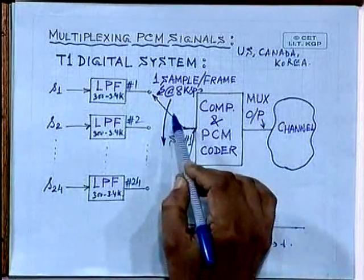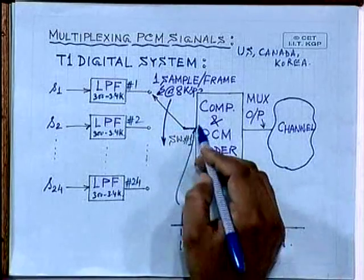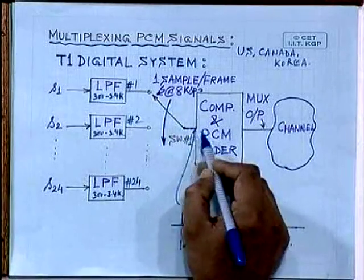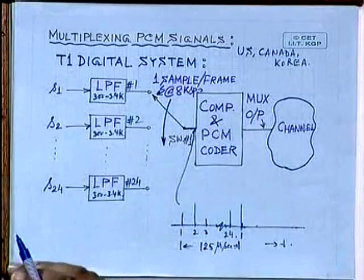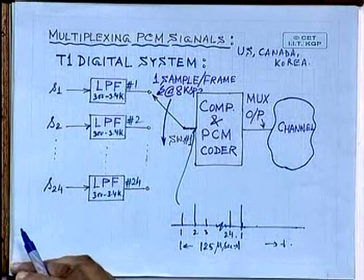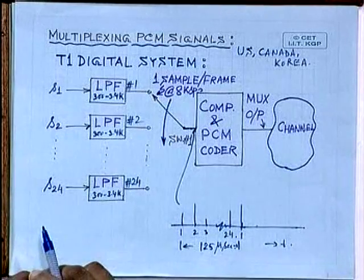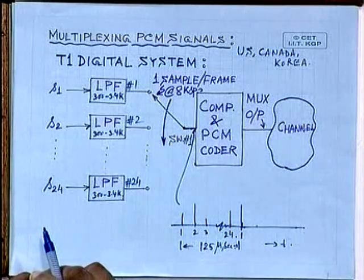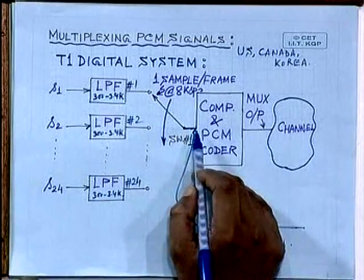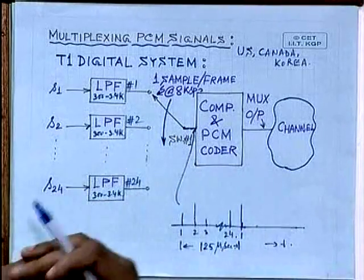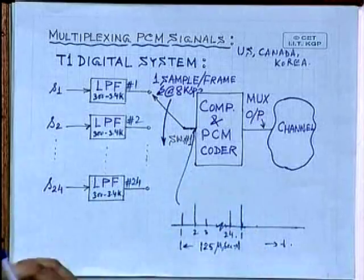Obviously, the commutator switch has to operate at a fast rate. The sample rate at the input of the compression and PCM coding unit is 24 × 8 = 192 kilo samples per second. This PCM coder therefore has to operate at a higher clock rate.